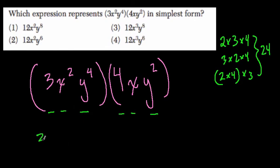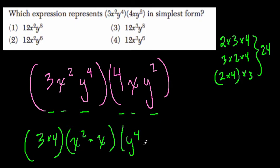And the same is true here, even though the numbers are less friendly. So here we can say, I want to do 3 times 4 first, and then I want to do x squared times x, and then I want to do y to the fourth times y squared.